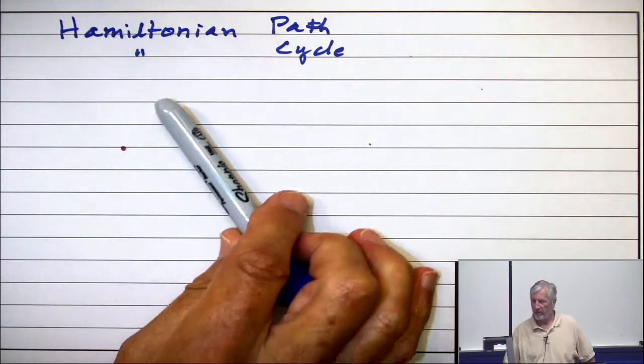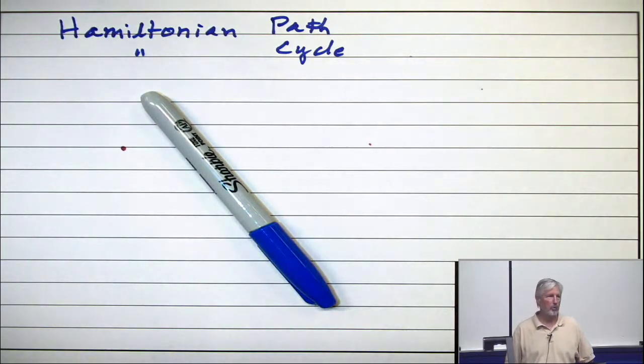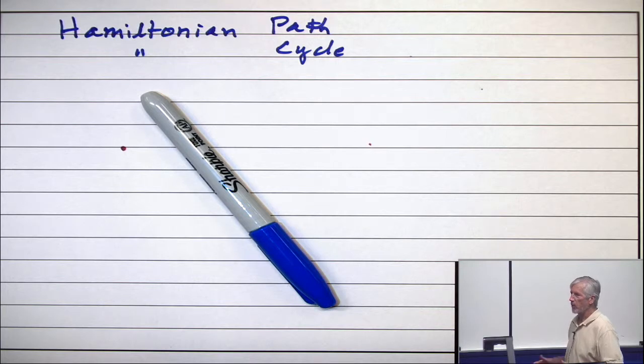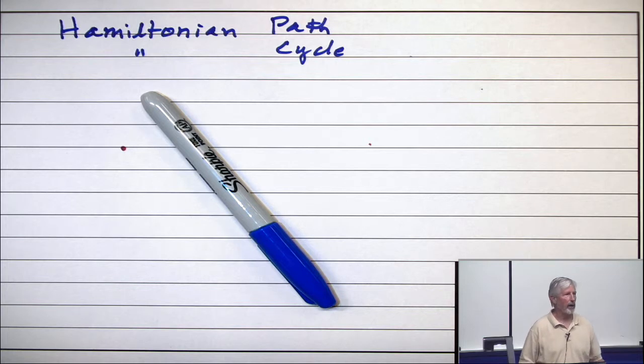So if I were to give you a graph with 25 vertices on it and then say tell me whether or not there's a Hamiltonian cycle, there would be quite a bit of luck involved as to whether or not you could answer that.